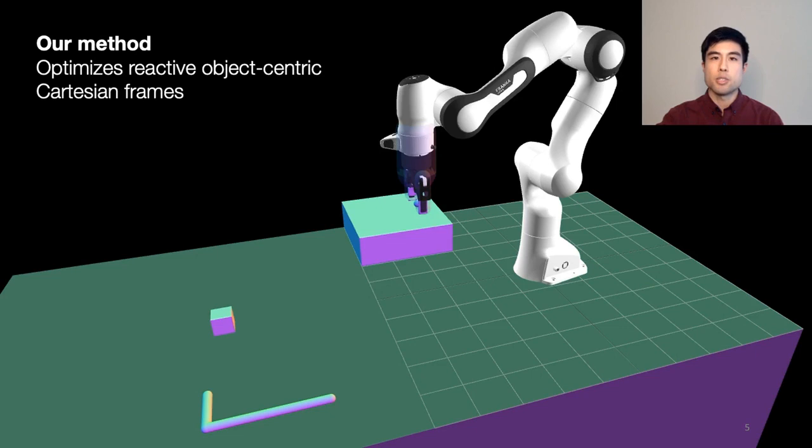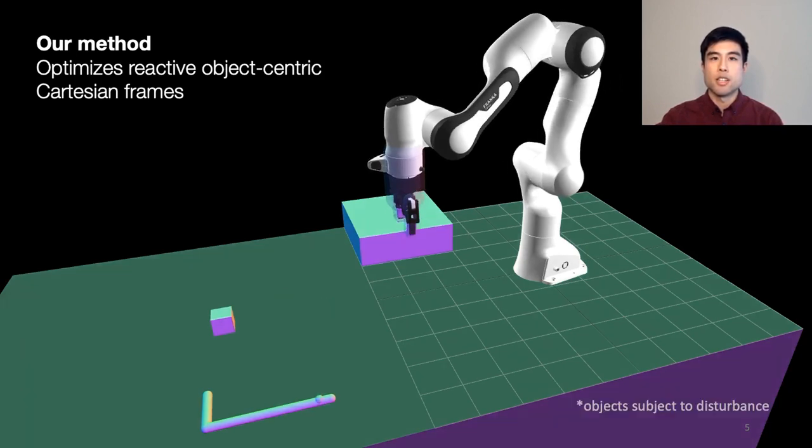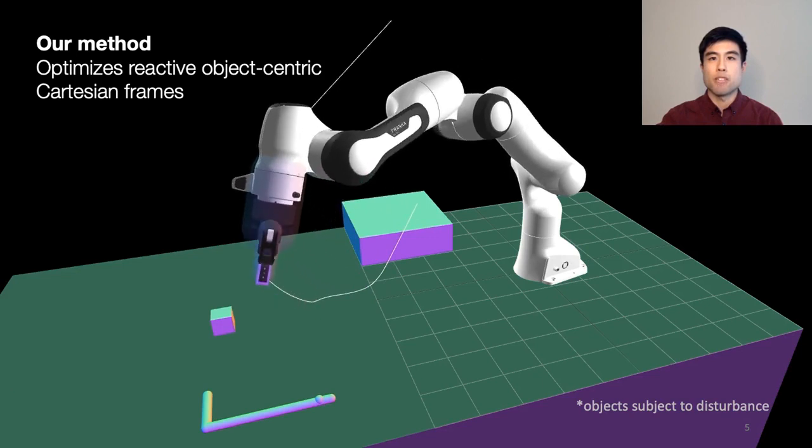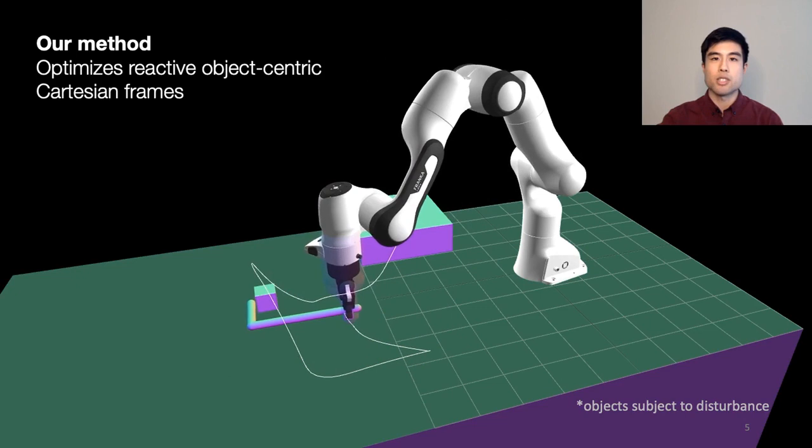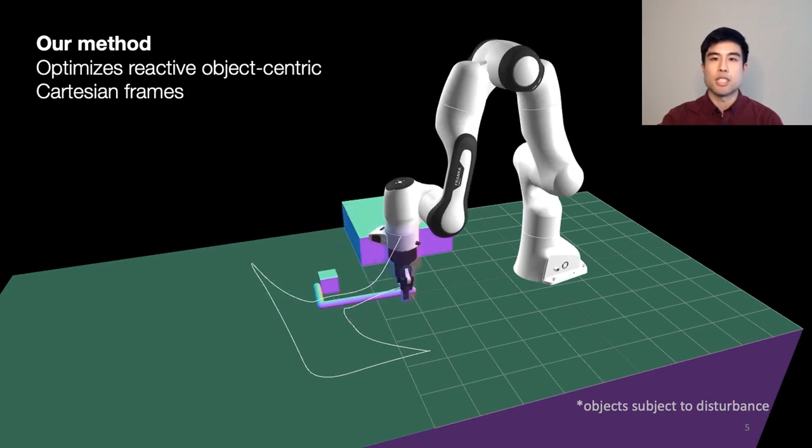The key contribution of this work is a TAMP framework that optimizes trajectories over object-centric Cartesian frames rather than joint configurations. The plans produced by this framework remain valid even if objects are moving. The plans are executed by reactive controllers that adapt to these changes in real-time.